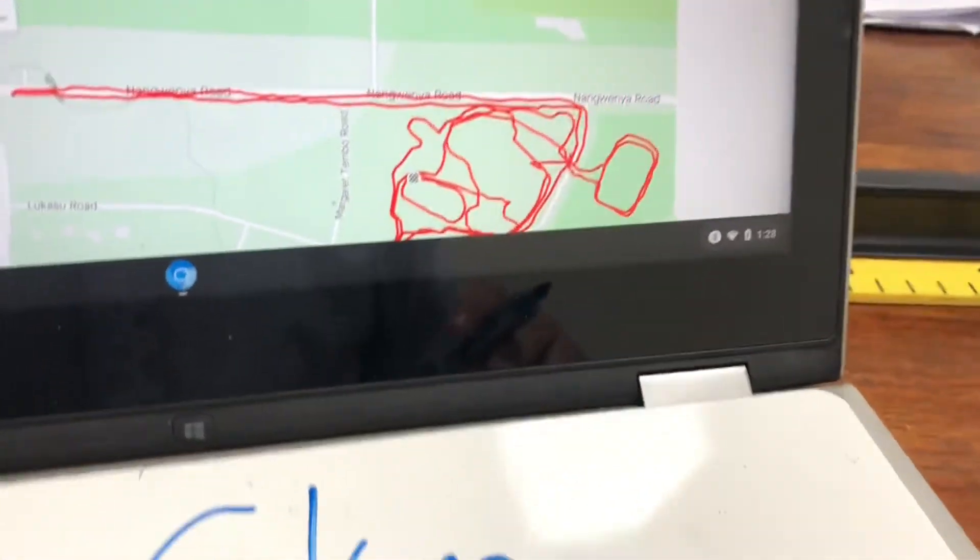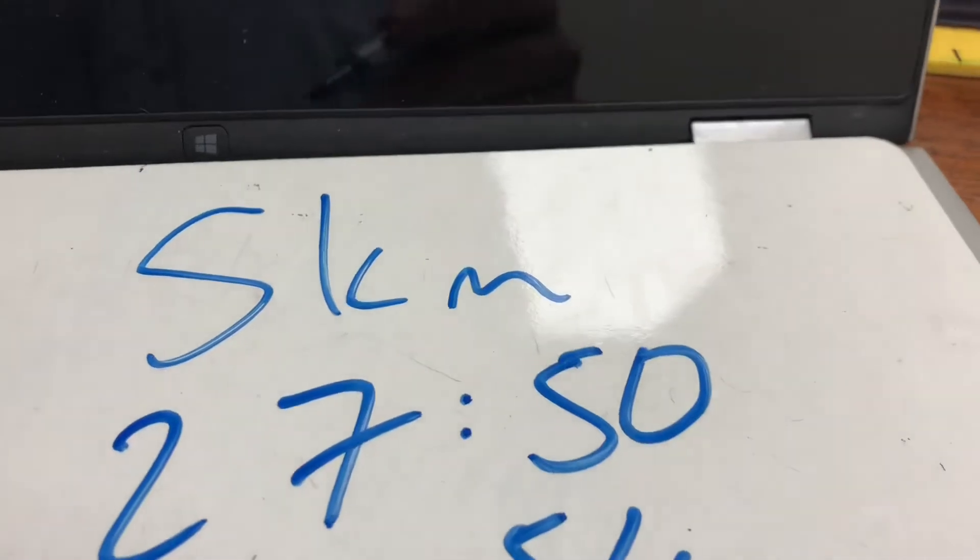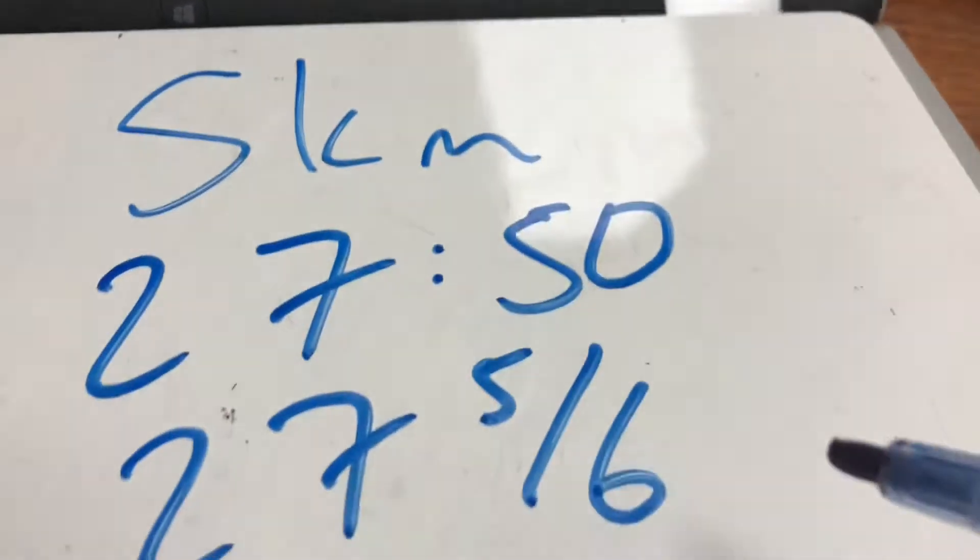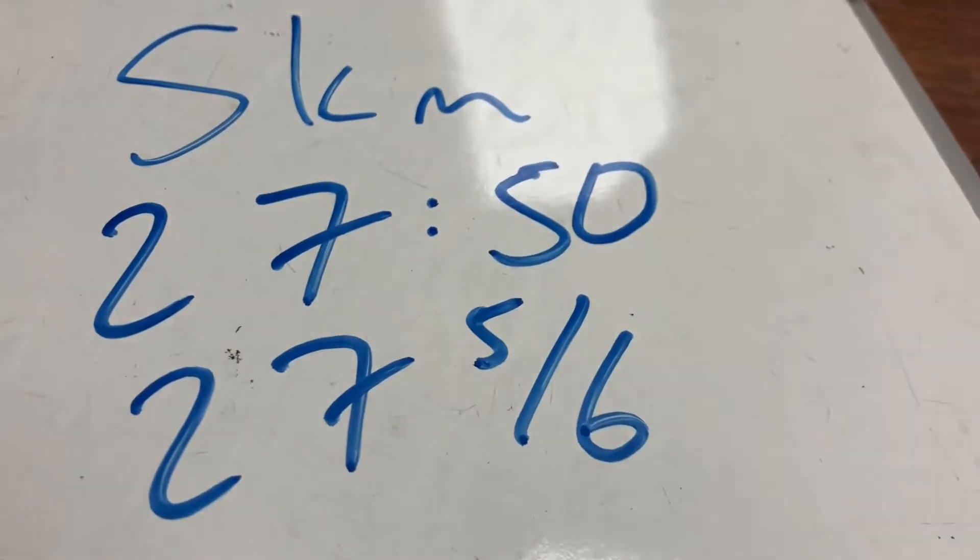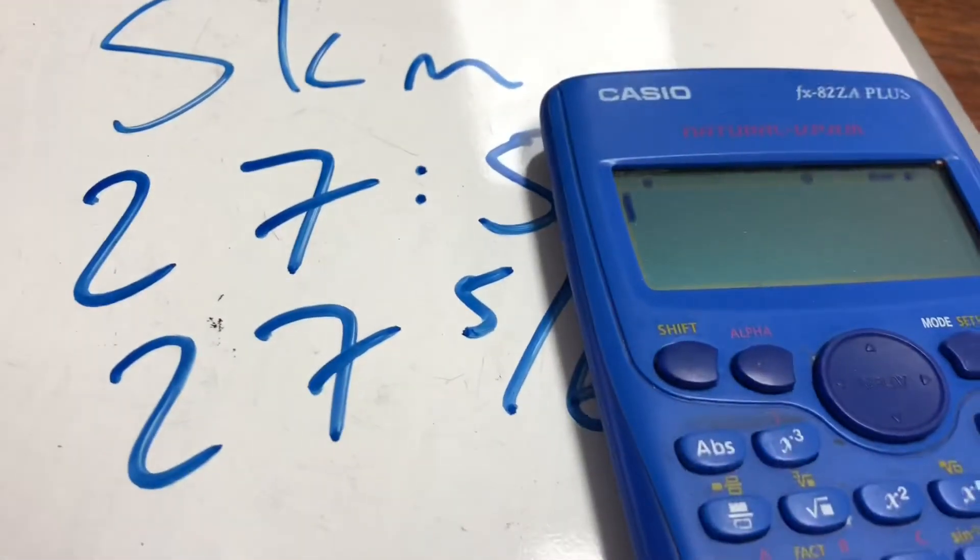That was the track I did. So we did 5km in 27 minutes 50. And remember it's 50 seconds out of 60 seconds. So I've got to turn that into decimals to be able to use a calculator.